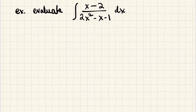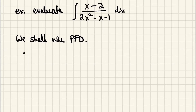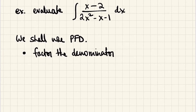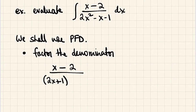We have an integral of a rational expression with no obvious u-substitution, so let's try partial fraction decomposition. The first thing we do is factor the denominator — we only need to factor the denominator, not the numerator; factoring the numerator would be unhelpful. Our numerator is x minus 2, and the denominator factors to (2x plus 1)(x minus 1). The entire process of PFD takes place as side work — we're just doing algebra here.